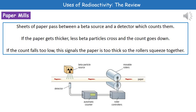Our next use is in paper mills. What we see here is that we've got paper going through rollers, and that's all to do with flattening and making it the same thickness. A bit further past those rollers, there is a beta particle source on one side of the paper, and on the other side we've got a detector. That's connected onto a counter, which then feeds into those actual rollers.